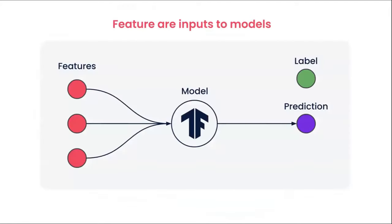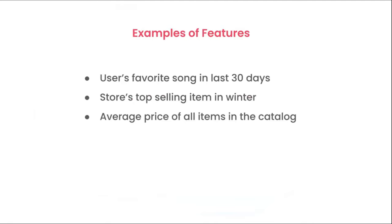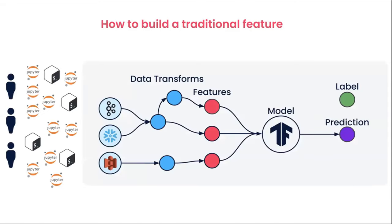When I say 'feature,' think of it not as a product feature but as an input to a model or a signal. Examples: a user's favorite song in the last 30 days, a store's top selling item in winter, or the average price of all items in a catalog. You can think of a model as a black box that takes inputs or signals and generates an output or prediction. Data scientists spend a lot of time on feature engineering — constant iteration on signals to build better models.